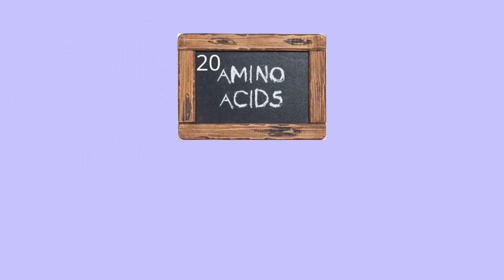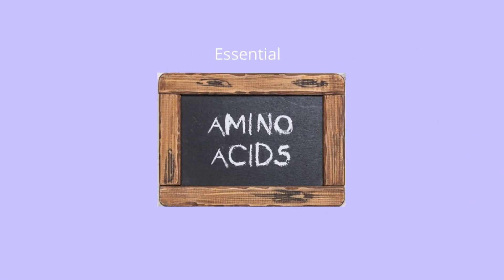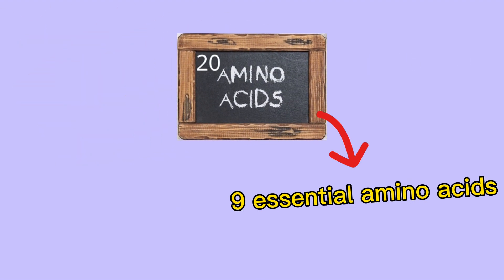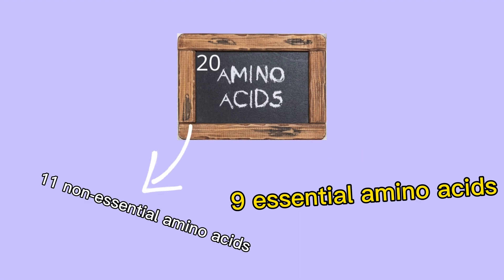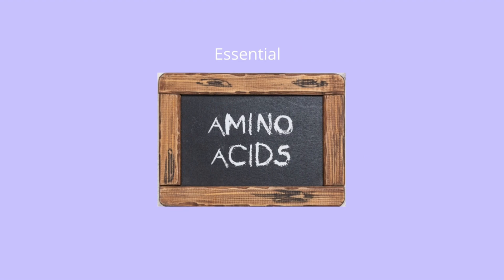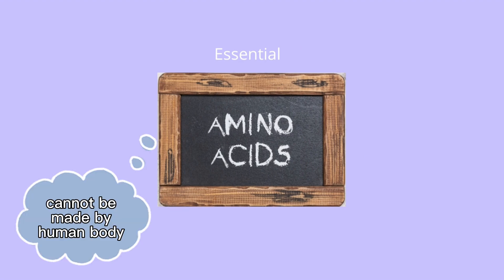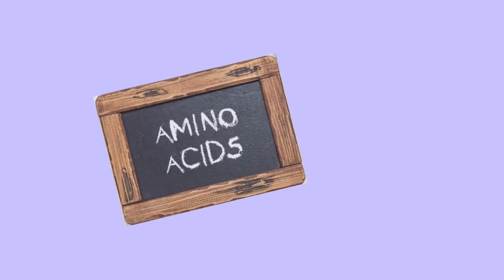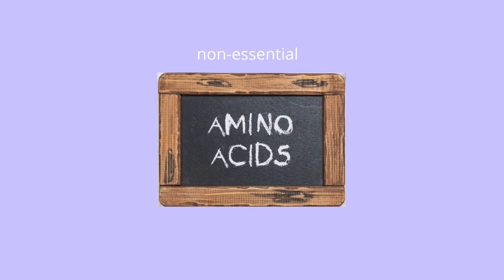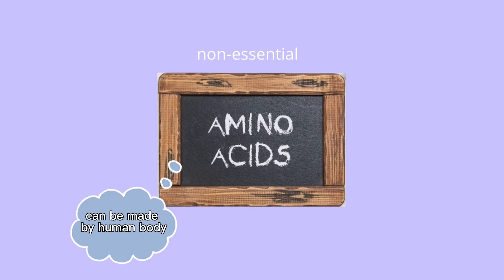There are 20 different amino acids which are universal to all living organisms. All 20 amino acids are classified into two different groups: essential amino acids and non-essential amino acids. Out of the 20 amino acids, 9 are essential amino acids and the others are non-essential. Essential amino acids are a group that cannot be made by the human body and must come from the diet. Non-essential amino acids, however, are ones that the body is able to synthesize and produce.